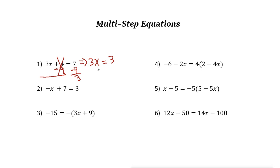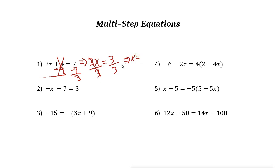Now the next step: 3 is multiplied by x. The inverse operation of multiplication is division. Divide both sides by 3. Then 3x divided by 3 is just x. So x equals 3 divided by 3, which is 1.